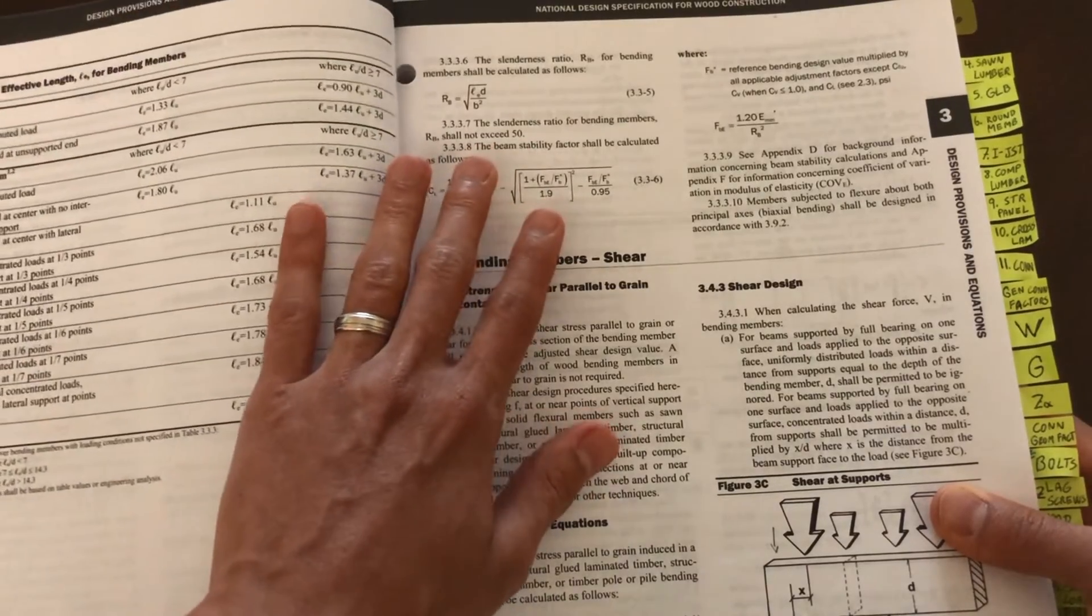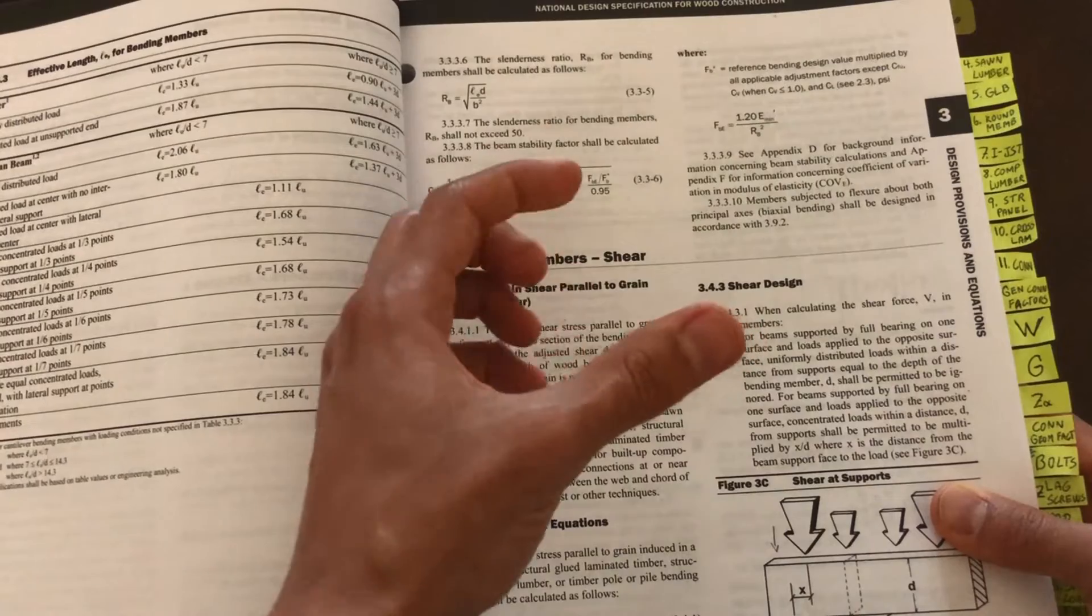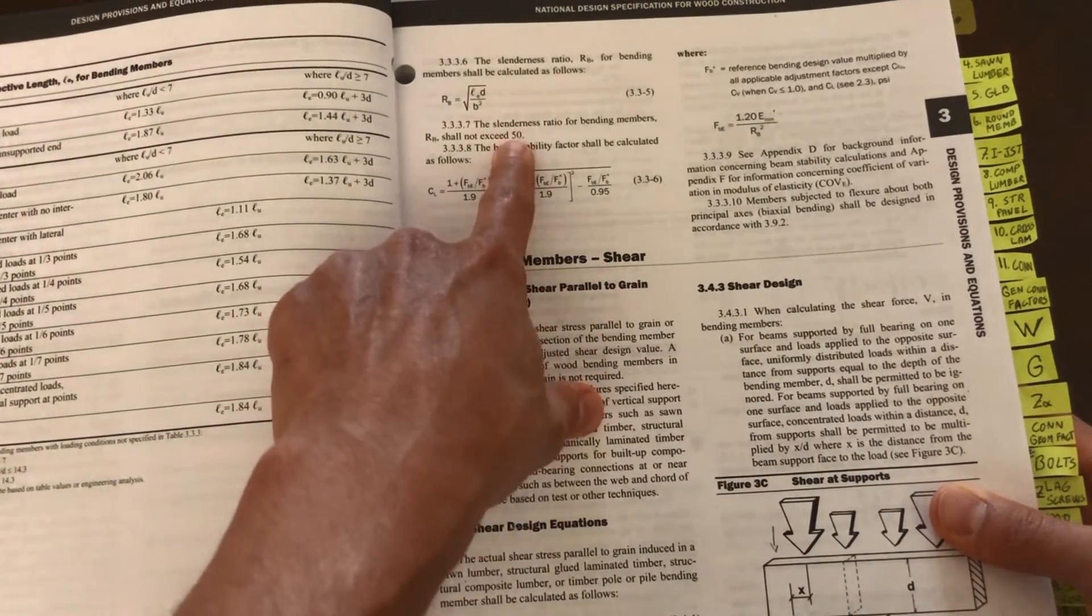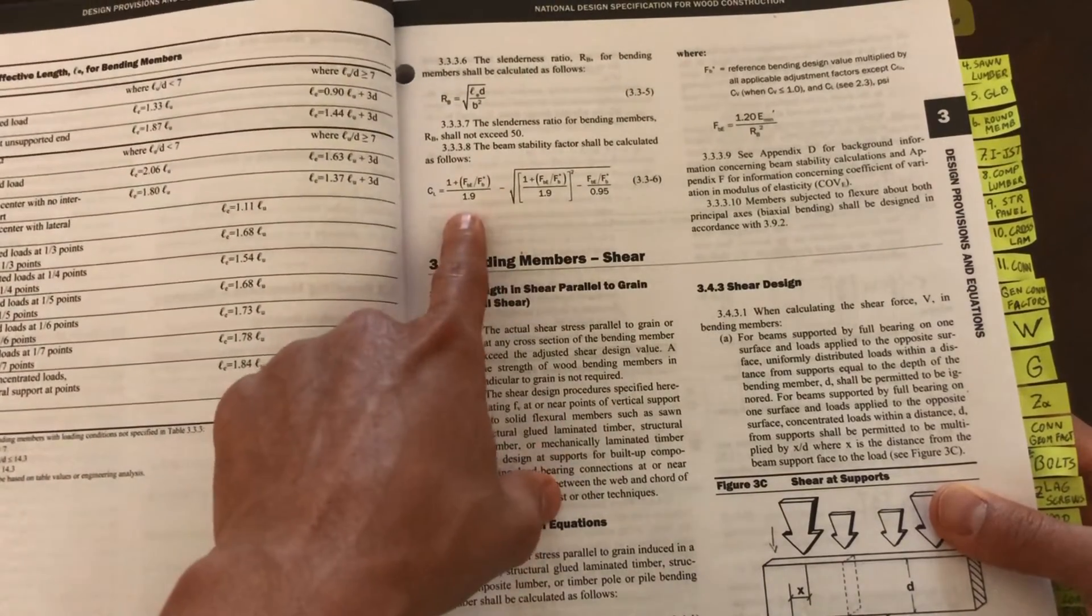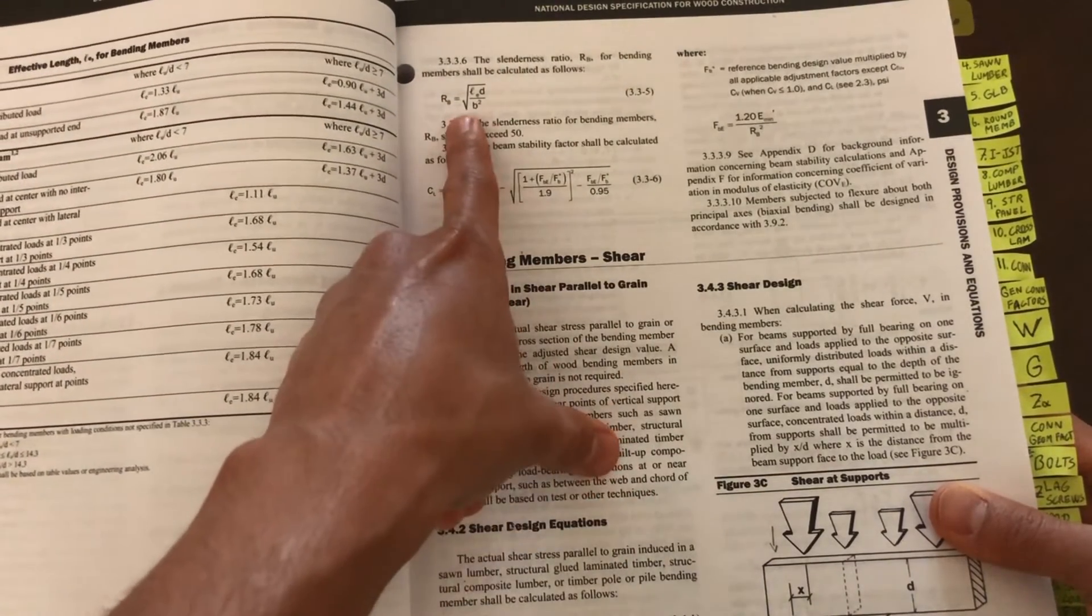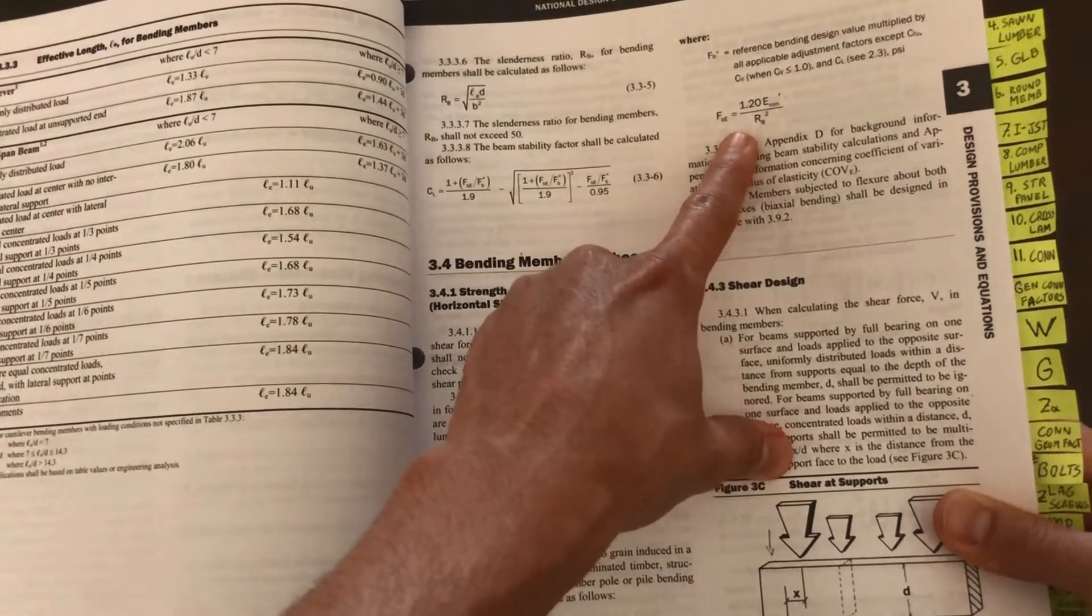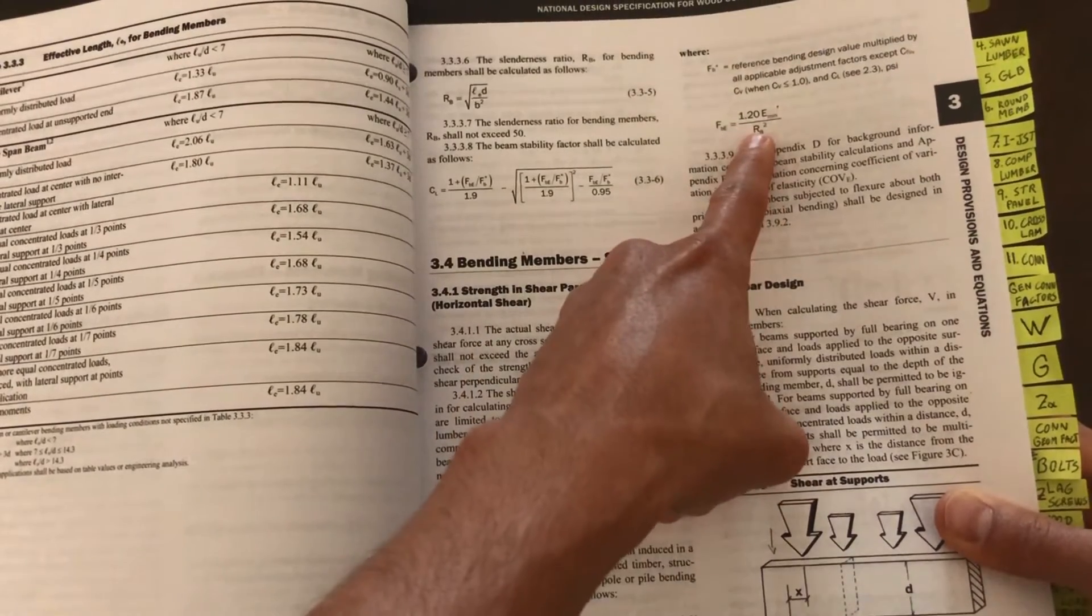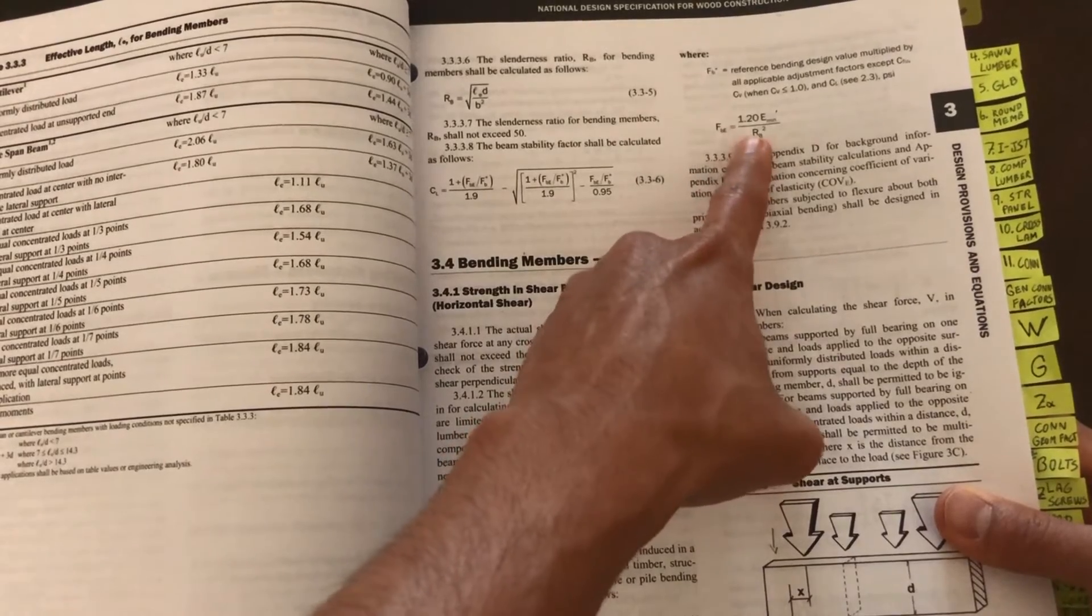This has an upper limit of 50, and this is a code limit basically saying that we cannot design or use members that are too slender - something that's really deep and very thin. If that ratio, the slenderness ratio, exceeds 50, we're in trouble. We have to use a different member size.